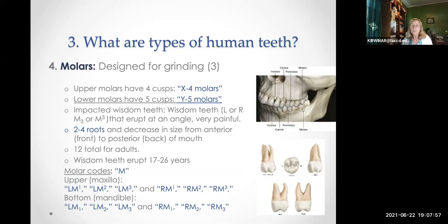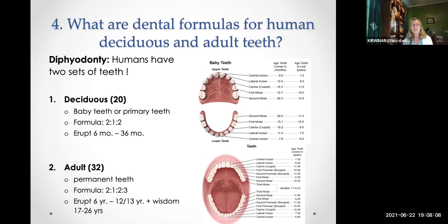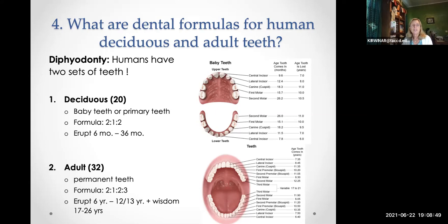Do you remember the four types of teeth? Incisors, canines, premolars, and molars. How many teeth do babies have? 20. The dental formula for a small child is 2:1:2 — two incisors, one canine, two molars. How many teeth does a normal adult have before wisdom teeth are removed? 32. The permanent teeth dental formula is 2:1:2:3.